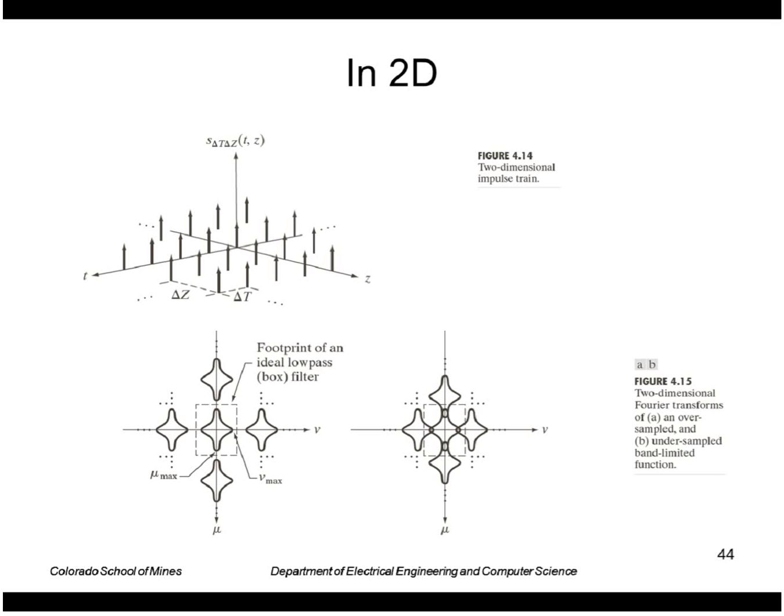In 2D this is kind of what I drew with the overlapping thing, where this is our Fourier transform of our image, that's the ideal low-pass filter, and here is a problem case where the transforms overlap.